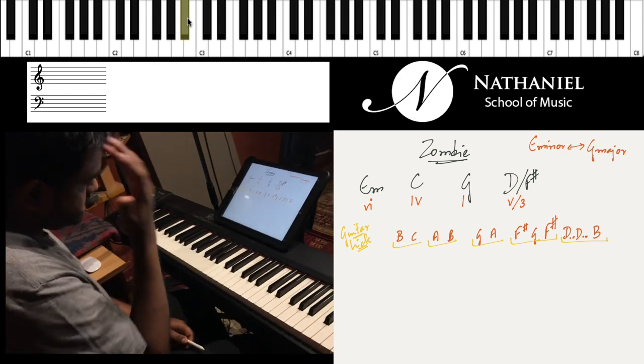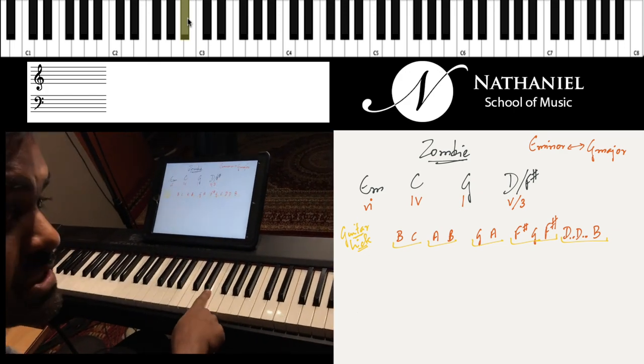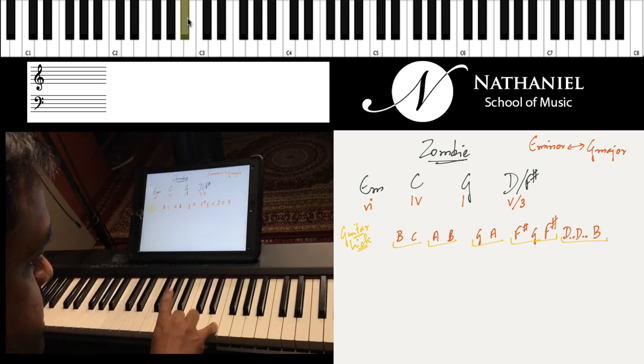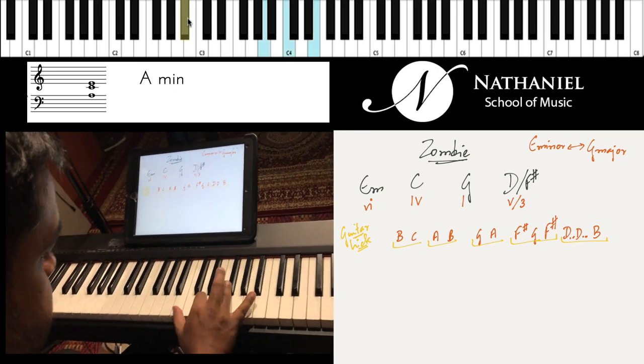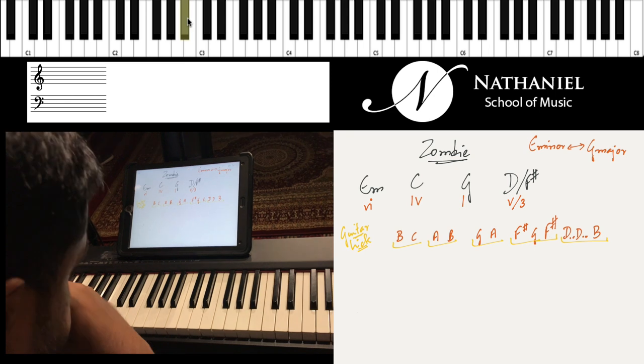You will realize that the sixth note—G, A, B, C, D, E—is E, and the two, the three, and the six form minor chords in a major scale. That's A minor, B minor, and E minor.